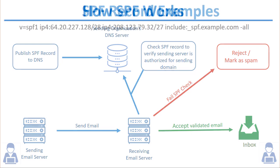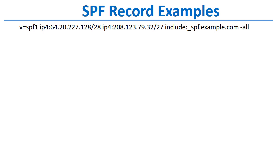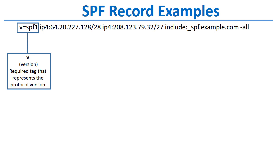Now let's talk about SPF records and how to set them up. This is on the outbound side, set up by the domain owner or mail server administrator to protect their outbound mail by adding an SPF record indicating what servers are allowed to send mail on behalf of their domain. Every SPF record has certain elements, such as the v= tag, which is the SPF version. All SPF records begin with v=spf1.